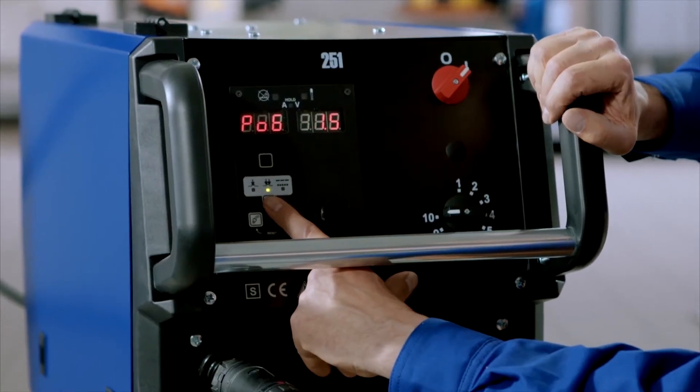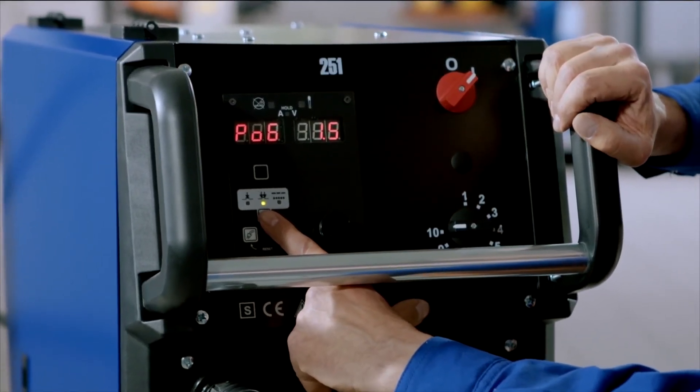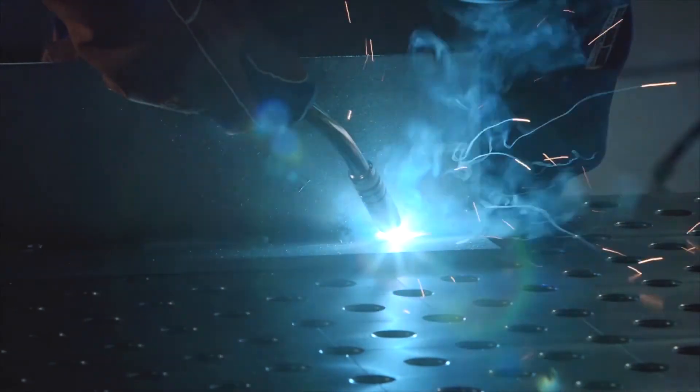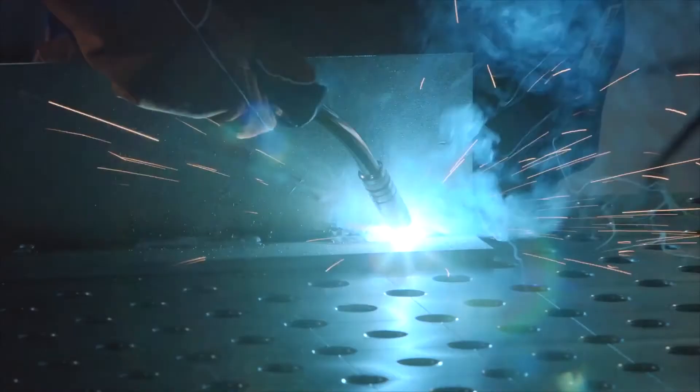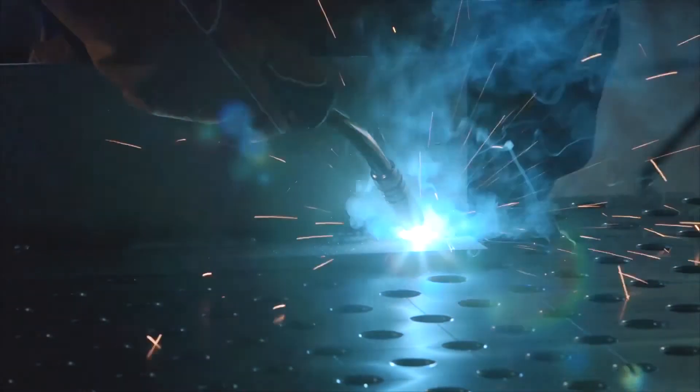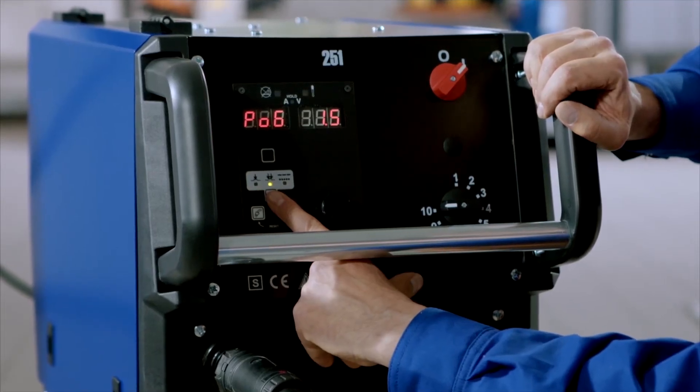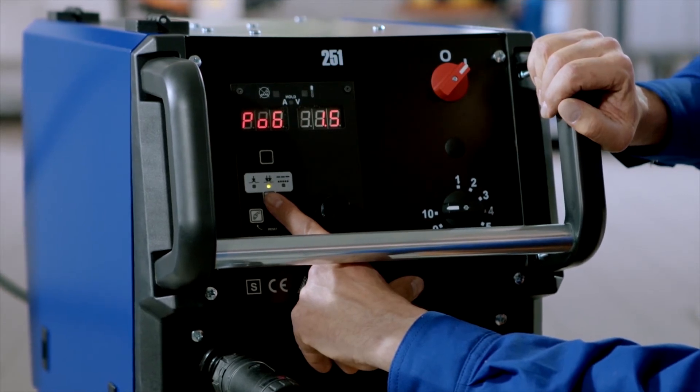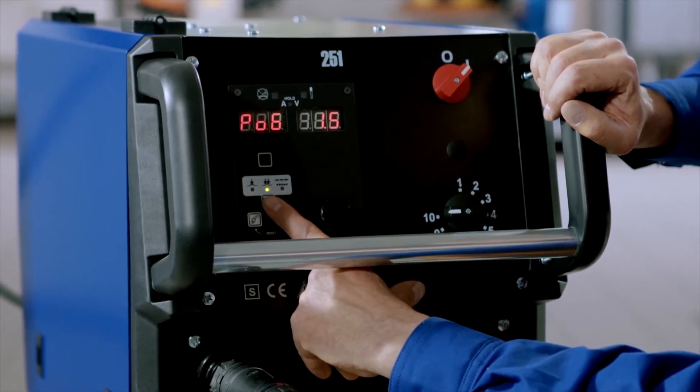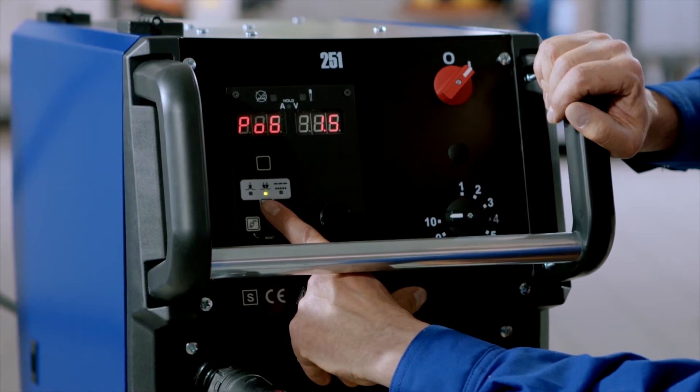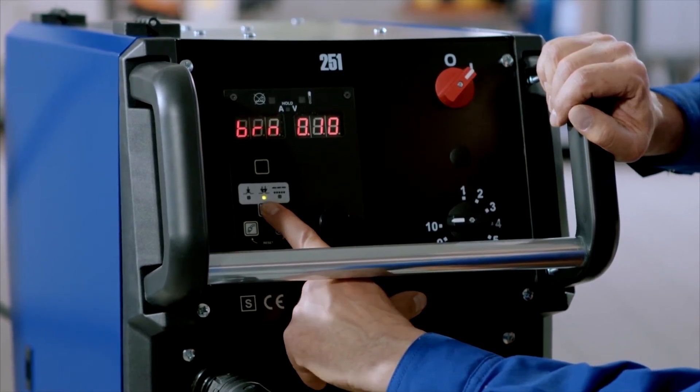Looking now at the gas post flow time, users who are new to welding should take particular care not to move the torch away too quickly after welding as the weld metal will still be glowing. To protect the hot metal from the ambient atmosphere and achieve a perfect welding result, set the gas post flow time to between 1 and 2 seconds.